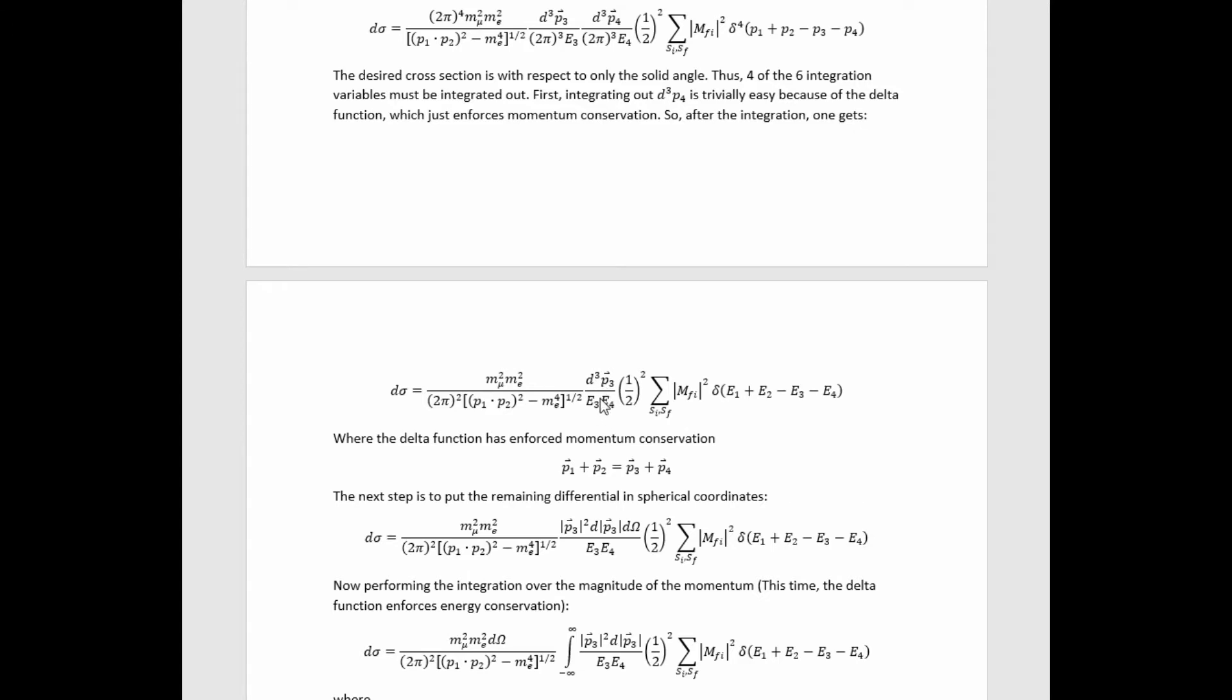I chose to integrate out the anti-muon momentum and leave the cross-section with respect to the solid angle differential of the outgoing muon. So we need to integrate over the magnitude of the momentum of the muon here to leave the muon solid angle differential behind.